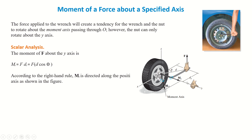If we want to calculate the moment about the y-axis, because the nut is rotating about its own axis which is the y-axis — you can see here, this is the y-axis and the nut will rotate about it. We are applying force on the wrench, the distance between the hand and wrench is D, and D makes an angle theta with the x-axis. So the moment equals force multiplied by its perpendicular distance, which is D cos theta.